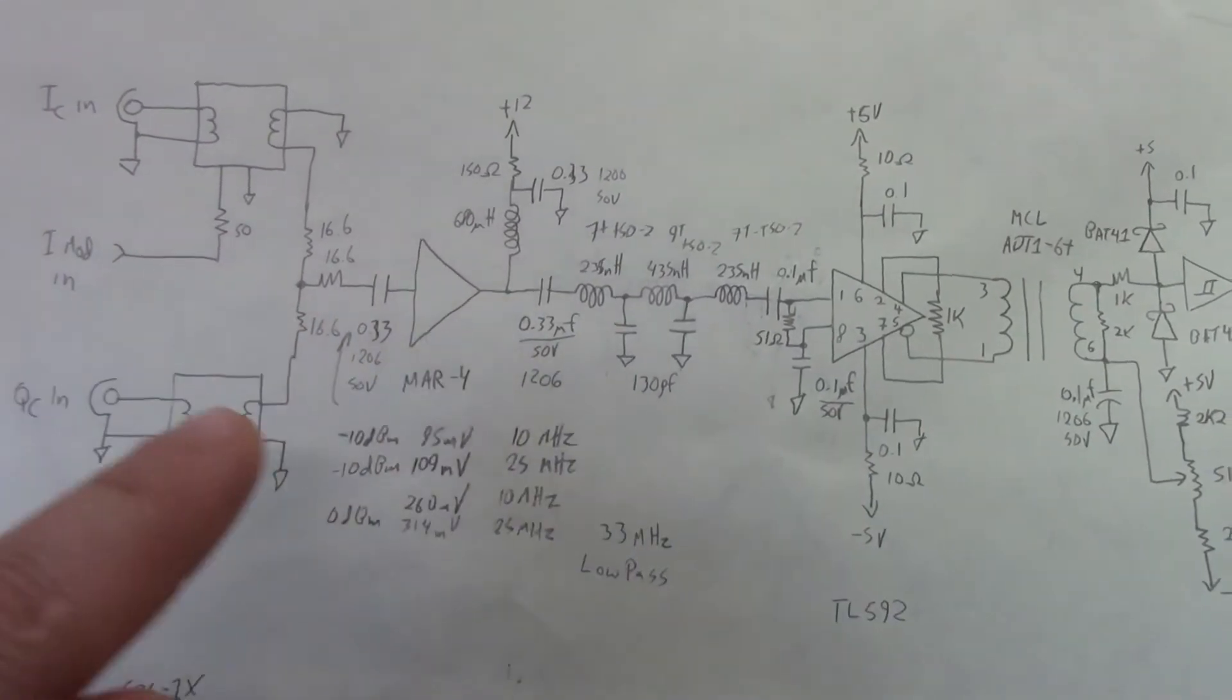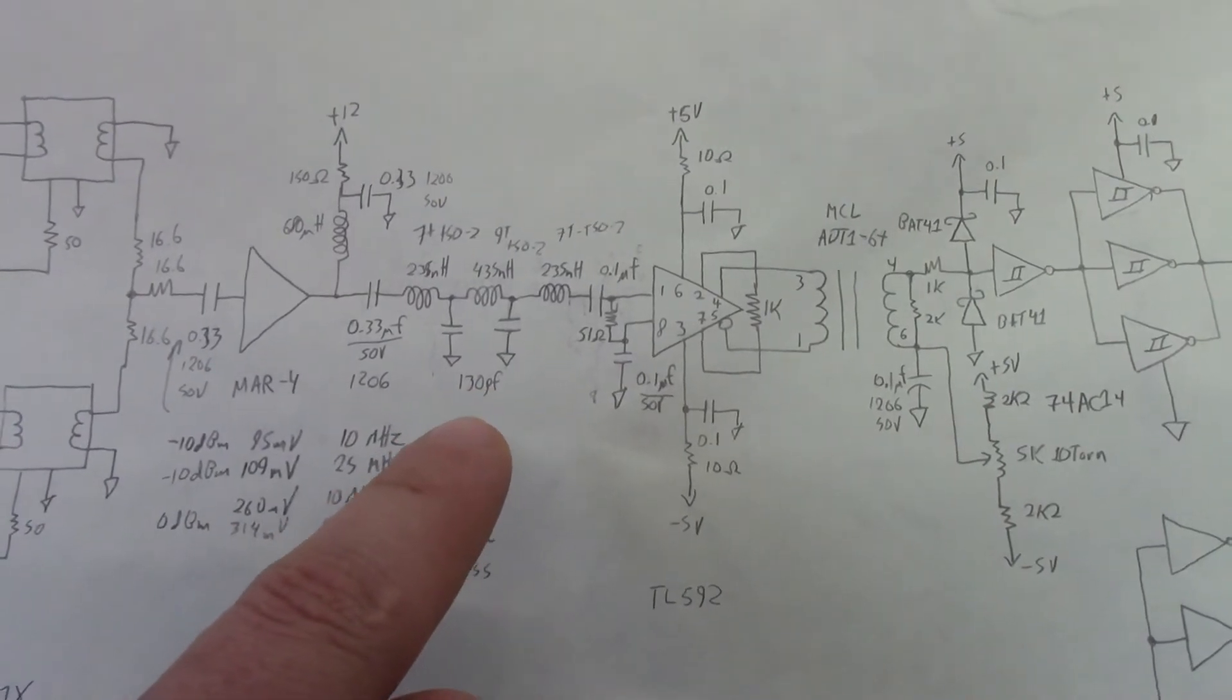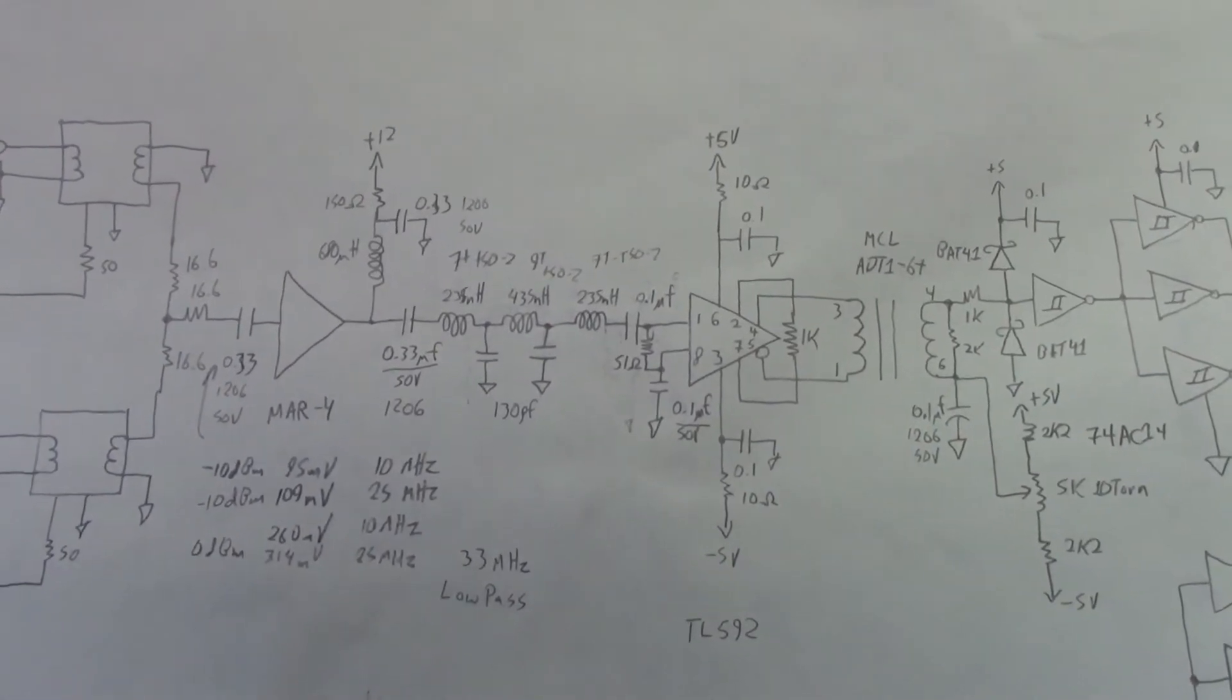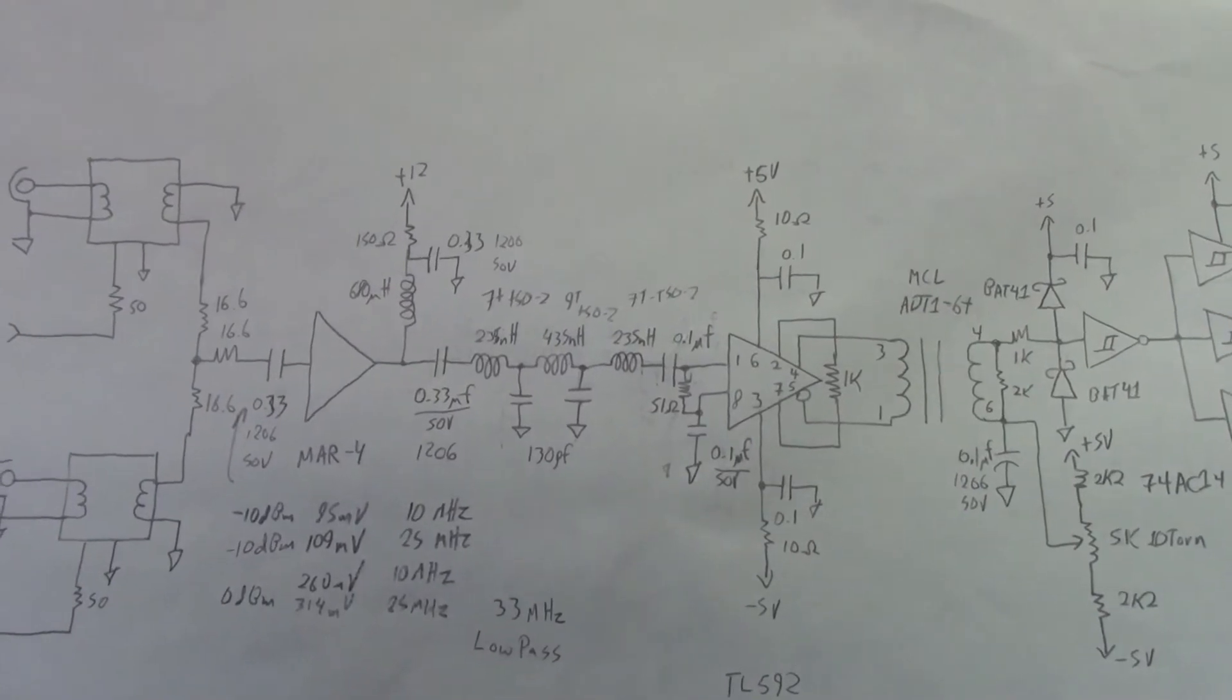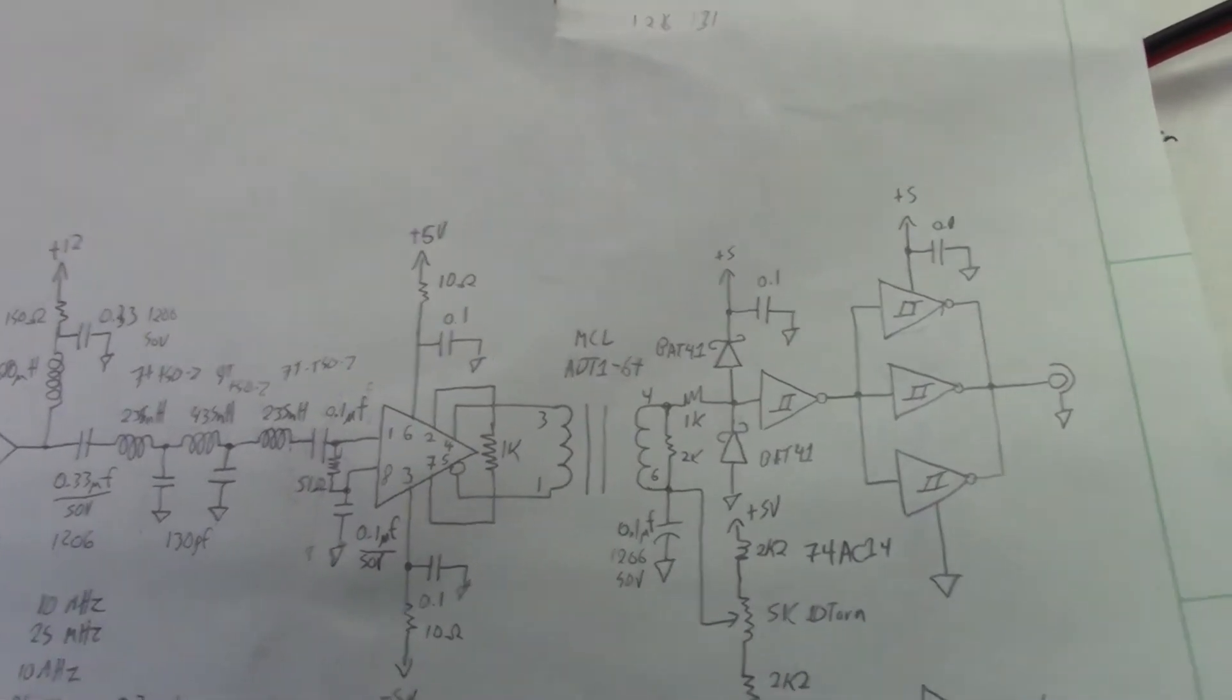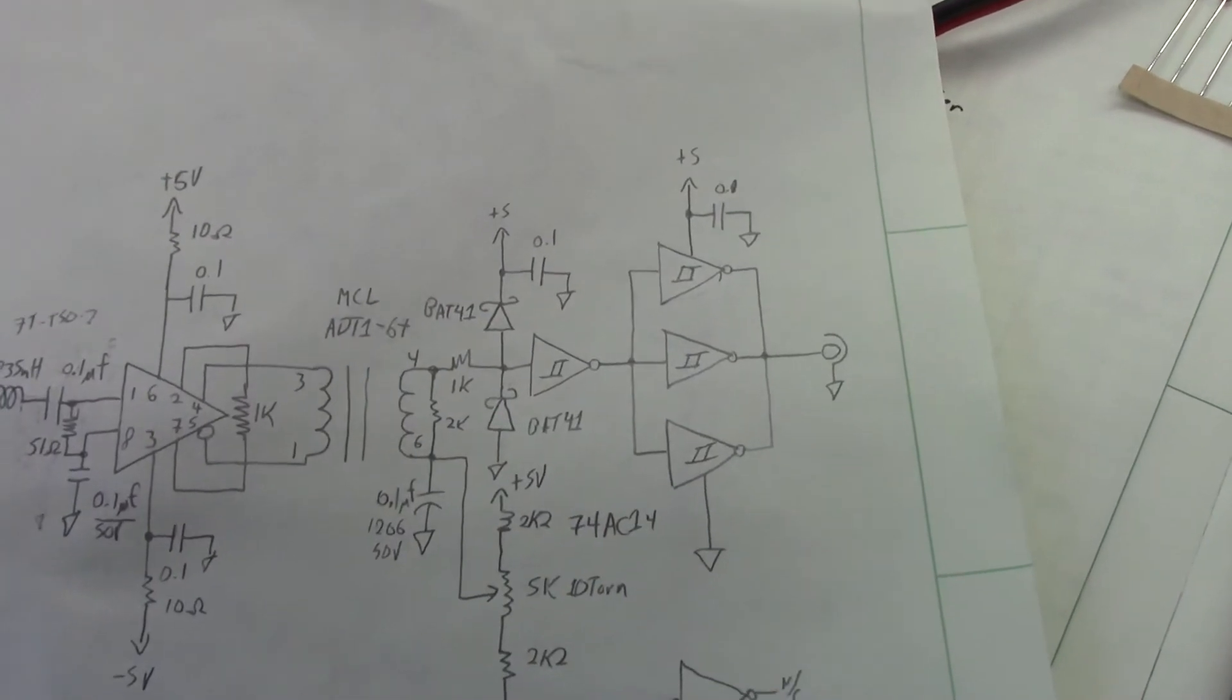Following that, it goes through a 35 megahertz low-pass filter which is used to get rid of the DDS switching products, because after all this is going to be fed by a DDS source which has 200 megahertz switching products we need to get rid of. Following that, we have a TL592, which is a differential video amplifier, and then that's transformer fed into our little Schottky hex inverter limiter.